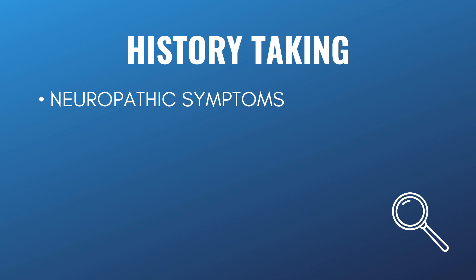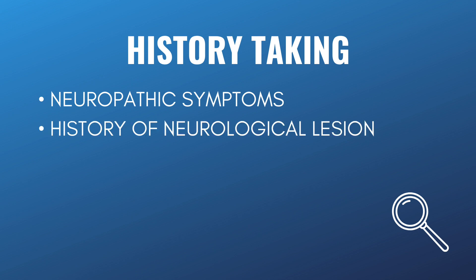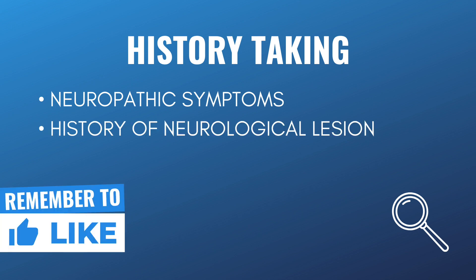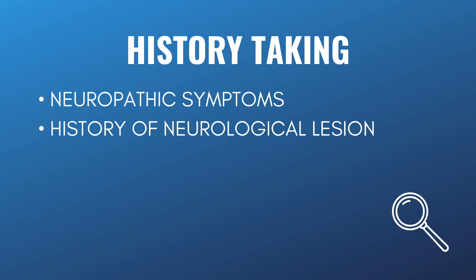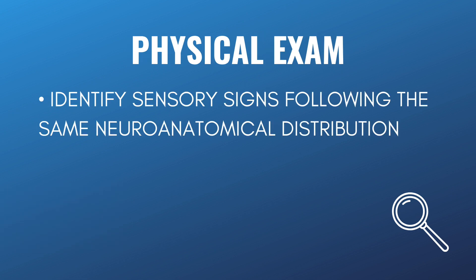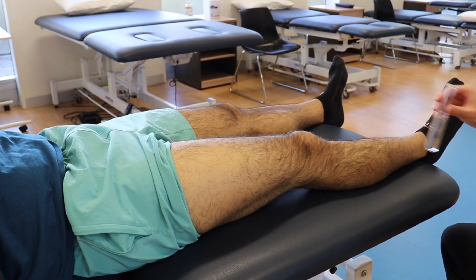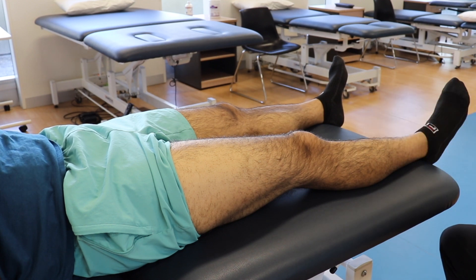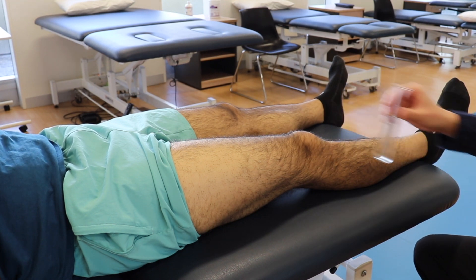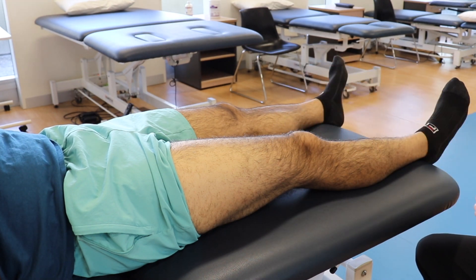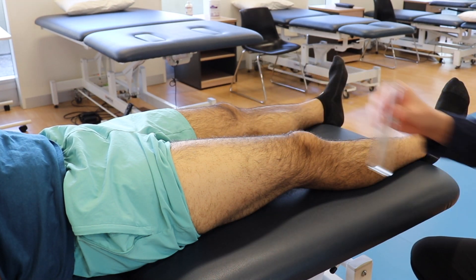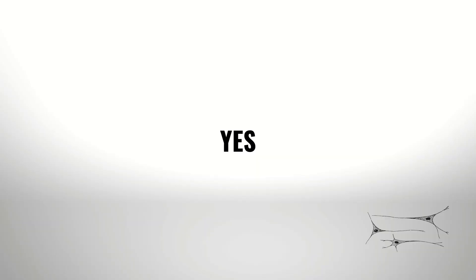The assessment of neuropathic pain requires a systematic approach. A detailed history taking assesses for any symptoms of neuropathic pain, plus any injury or medical history indicating a possible neurological dysfunction. A physical exam is conducted to assess for any clinical changes in sensation — for example, applying a test tube filled with warm water to relevant areas of the skin. Physiotherapists are interested in whether any changes in sensation follow the same neuroanatomical distribution, as this would make nerve dysfunction more likely.